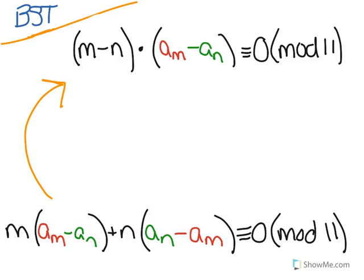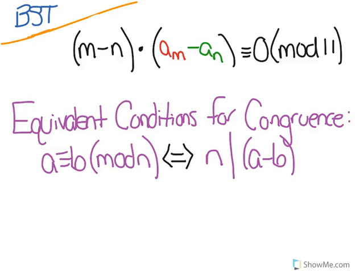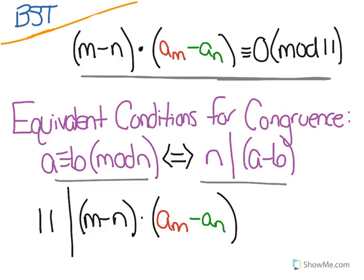Now we need to take a quick break and remember that the equivalent conditions for congruence theorem states that A being congruent to B modulo N is equivalent to N dividing A minus B. So if we apply this to our congruence up here, we can see that this first congruence is equivalent to 11 divides M minus N times A sub M minus A sub N.